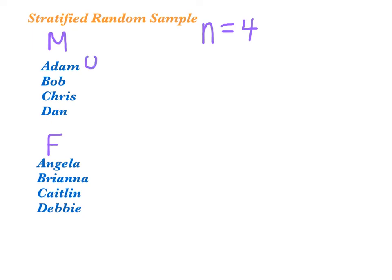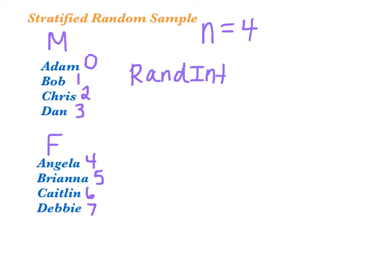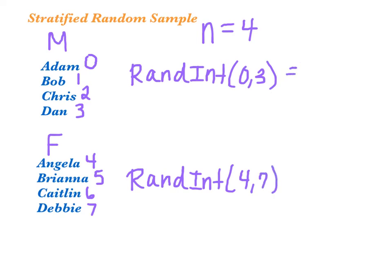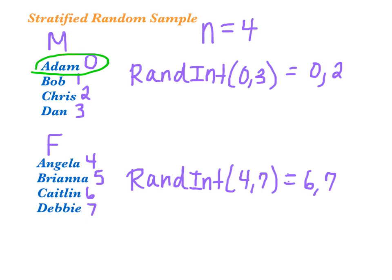Let's number the people in our groups. We'll start at 0: 0, 1, 2, 3 for the first group, and continuing on with 4, 5, 6, and 7 for the second. I'll use the calculator command randint(0, 3) and repeat as needed to get 2 unique numbers, then randint(4, 7) for the second group. When I do the first command I get 0 and 2; when I do the second command I get 6 and 7. So Adam is 0 and Chris is 2; Caitlin is 6 and Debbie is 7.